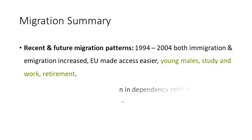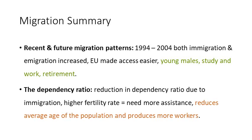In terms of recent and future migration patterns, from 1994 to 2004 both immigration and emigration increased. The EU made access to immigration easier, and the ability to move anywhere within the European Union — to settle, get a job, become educated — incentivised the movement of peoples. Most migrants tend to be young males looking for jobs, though some are looking to study. The UK attracts large numbers of foreign students because of its reputation for having a good education system, particularly at higher education level.